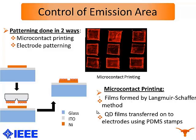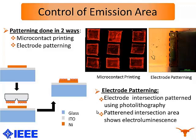Using the shape and size of the PDMS stamp, we can control the size of the quantum dot films that we are printing onto the layer, and also select the area where we want the emission to come from. The second way is electrode patterning. In this case, the intersection of the cathode and the anode is the area from where we expect emission from the quantum dot layer. So we pattern the intersection area of the electrodes using photolithography to control the area of emission from the quantum dot layer.